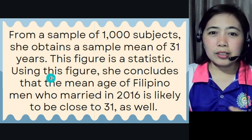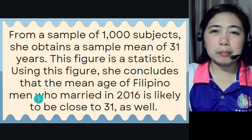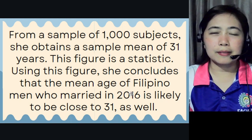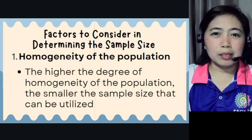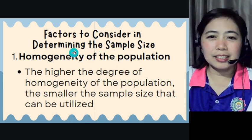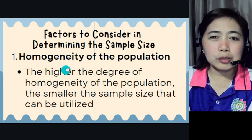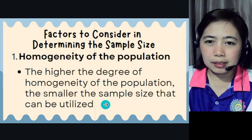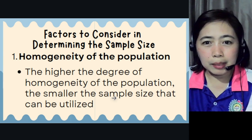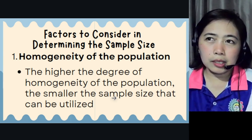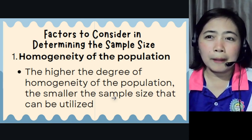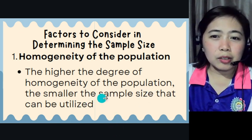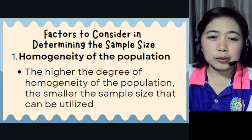Using this figure, the researcher concludes that the mean age of Filipino men who married in 2016 is likely close to 31 as well. Now, factors to consider in determining the sample size: first is the homogeneity of the population. The higher the degree of homogeneity of the population, the smaller the sample size that can be utilized. For example, for married people in the Philippines, if you don't specify the exact number of men in the population, it will be easier to get a smaller sample size.